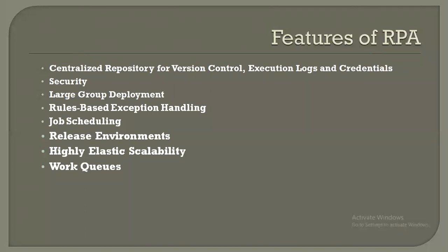The first feature is version control maintenance. Each process will be maintained in a version control system like SVN and TFS. The second feature is security, which is a major concern for customers. A couple of years back, customers were afraid to use RPA tools because of security issues. But now the security features are more robust in RPA tools, and RPA vendors themselves are assuring that they will pay any penalty if there are security problems.